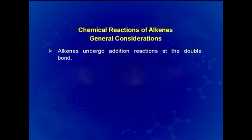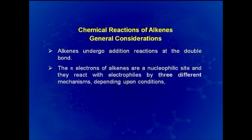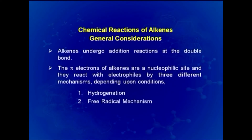Alkenes undergo addition reactions at the double bond. The pi electrons of alkenes are a nucleophilic site and they react with electrophiles by three different mechanisms depending upon reaction conditions. These may be hydrogenation, free radical mechanism, and polar mechanism or ionic mechanism.